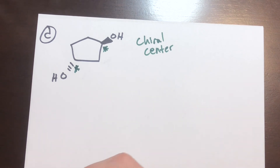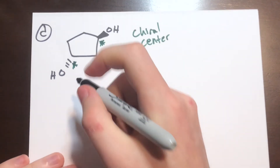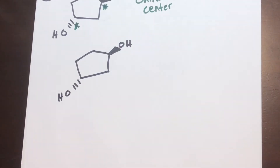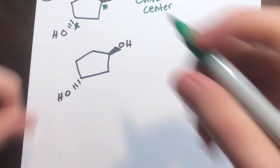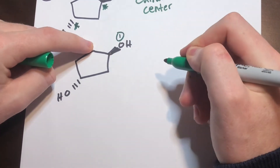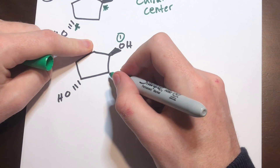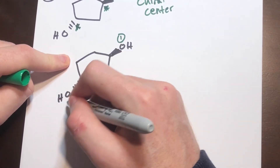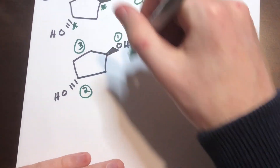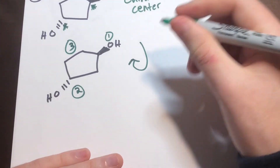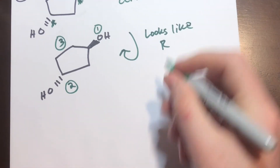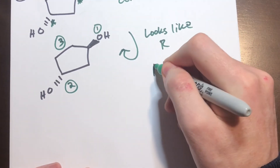Now we need to determine priority to find the absolute configuration. Redrawing to avoid clutter: this chiral center is bound to a carbon, a carbon, and an oxygen — oxygen is highest priority. We have a CH2 and a CH2 that are the same, and a CH2CHOH — the oxygen makes this group second priority, making the other carbon third priority. Looking at the orientation, it appears clockwise, so that looks like R. The hydrogen is in the back, so it is in fact R at this position.